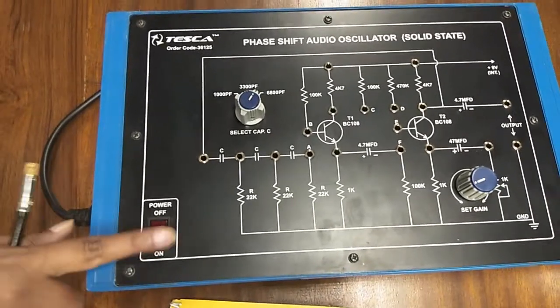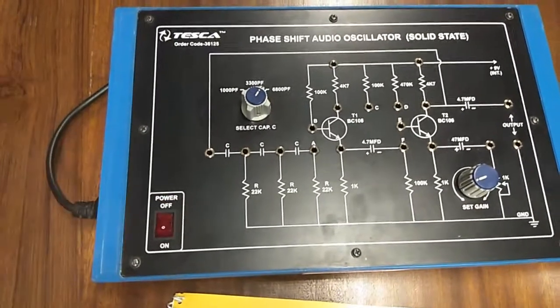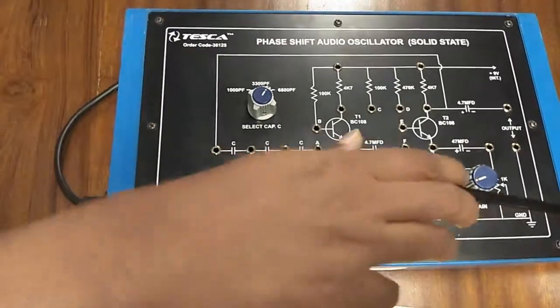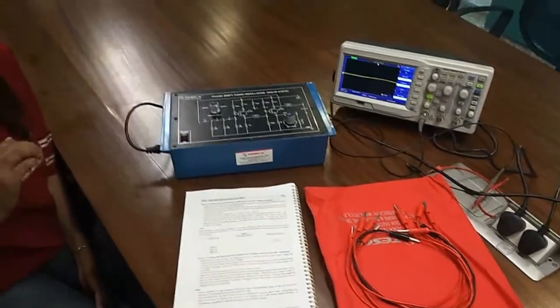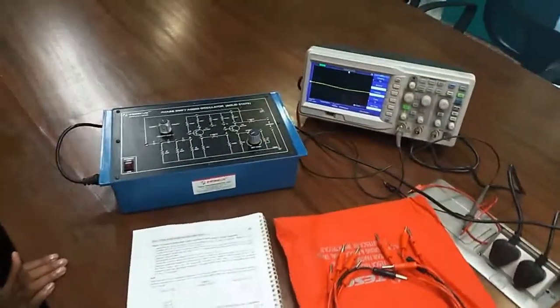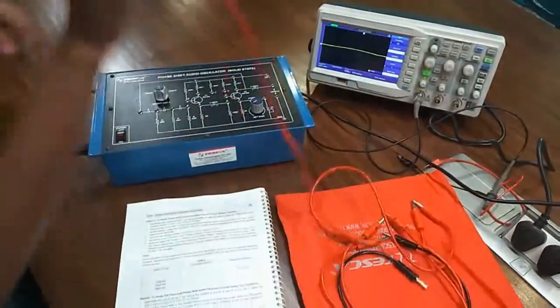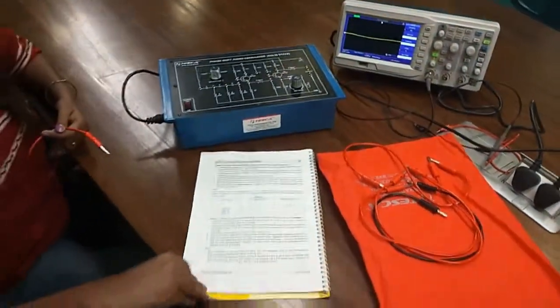To do this experiment we will also need a CRO. Build the circuit of phase shift oscillator using single transistor. The circuit diagram is given here in the user manual.